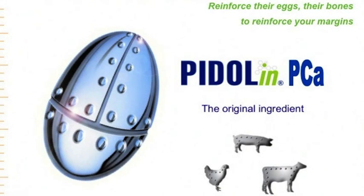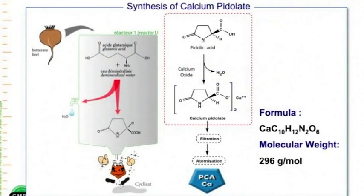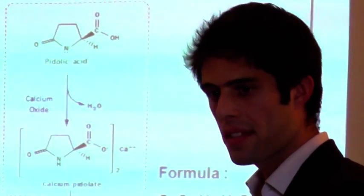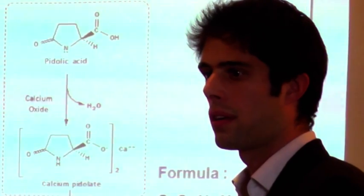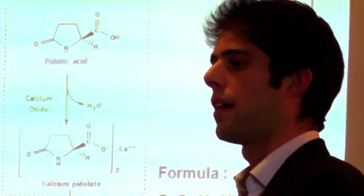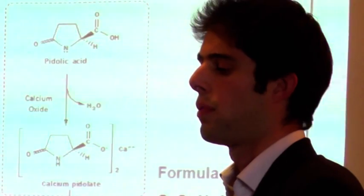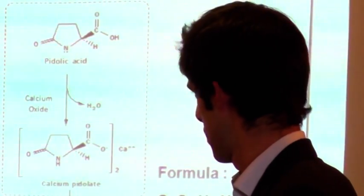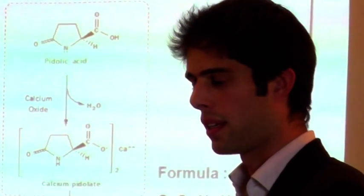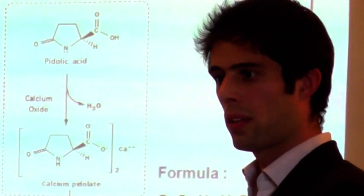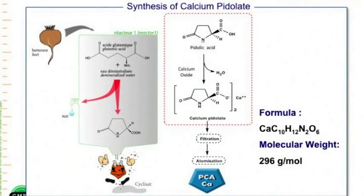First of all, just a scary picture here on screen. It's the structure of calcium pidoate. I just wanted you to have a clear idea of what it is. Calcium pidoate is obtained by chemical synthesis. We start from glutamic acid and we obtain a pidoic acid. With a reaction we reach two pidoic acids joined to one calcium — that's calcium pidoate.